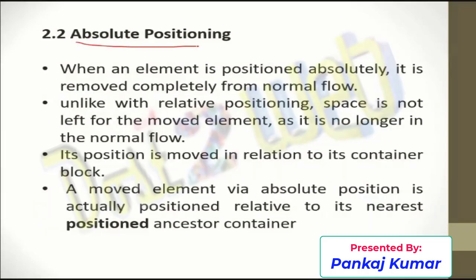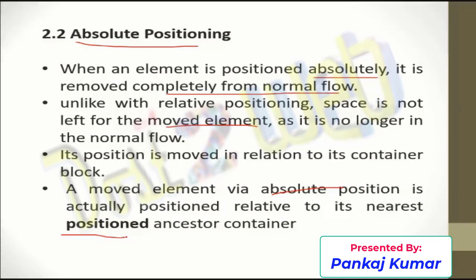Next, absolute positioning. Absolute means the element is positioned absolutely — it is removed completely from the normal flow. Unlike relative position, the space is not left for the moved element; it is no longer in the normal flow. The moment you define absolute positioning, it will not be considered in the normal flow, and the position will move relative to its container block. Whatever container you define, the position is fixed accordingly. The moved element via absolute position is positioned relative to its nearest positioned ancestor.